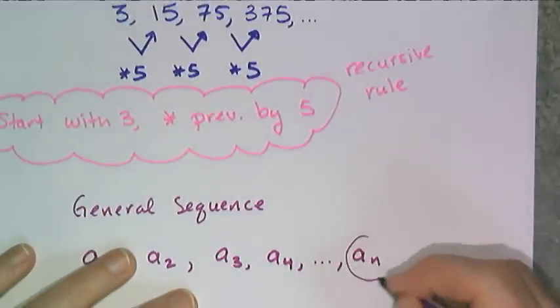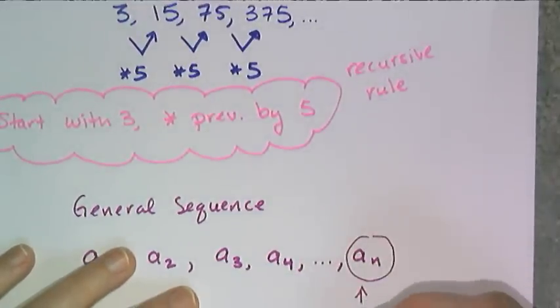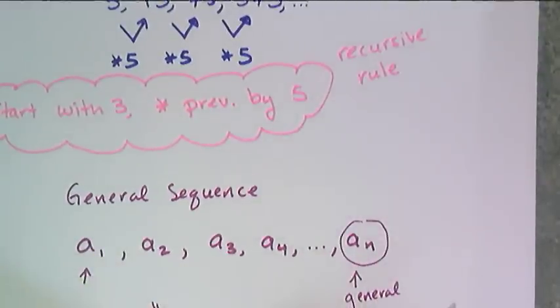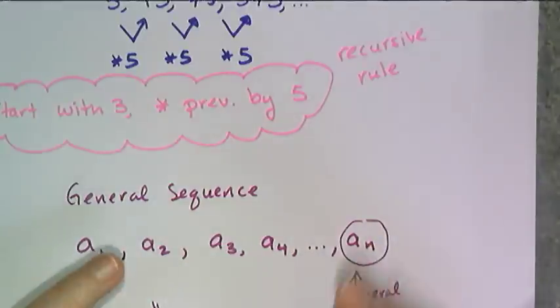Now this a sub n is a general term or a generic term in the nth position, and it's just a variable that represents any single term.